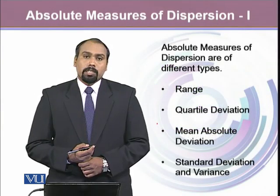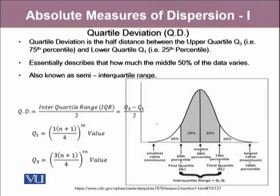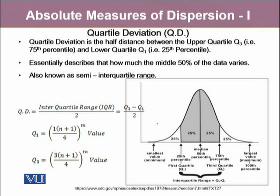Absolute measures of dispersion have another type called quartile deviation. Quartile deviation is heavily dependent upon quartiles, which are cut points. Quartile deviation is the half distance between the upper quartile and the lower quartile. The upper quartile is the 75th percentile or third quartile, and the lower quartile is the 25th percentile or first quartile. This quartile deviation essentially describes how much the middle 50% of the data varies. It is also known as the semi-interquartile range.